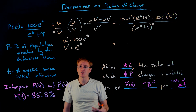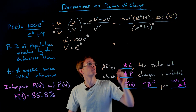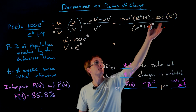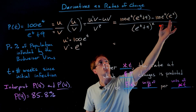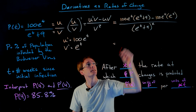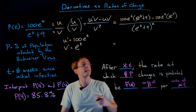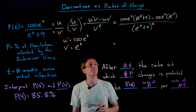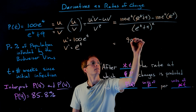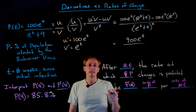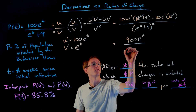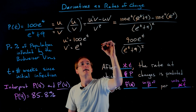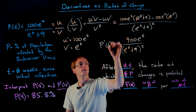There are various ways to simplify the numerator. One approach: factor out the common factor of 100 times e to the t. What's left over is (e^t + 9) minus e^t. Skipping a couple of steps, the e^t terms cancel and we're left with just 900 e to the t. So our numerator is 900e^t and we leave the denominator in factored form as (e^t + 9) squared. This gives us our formula for p prime of t.